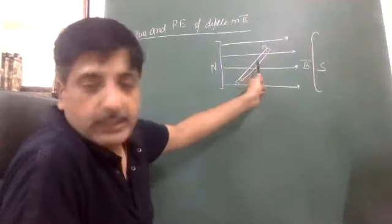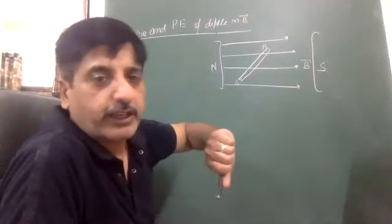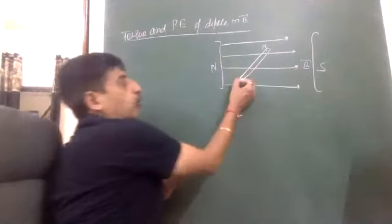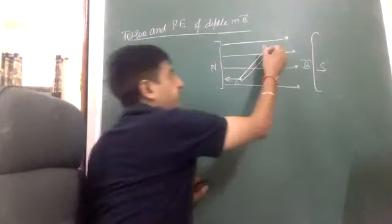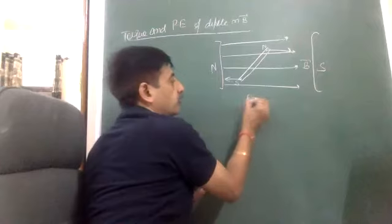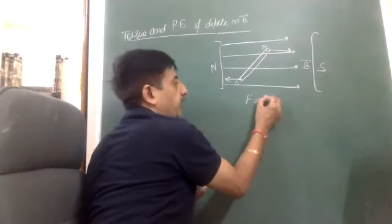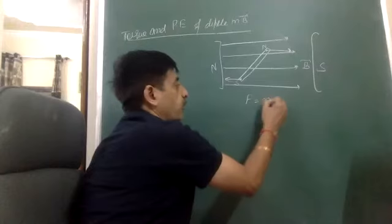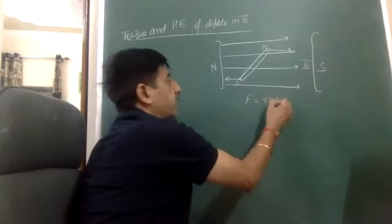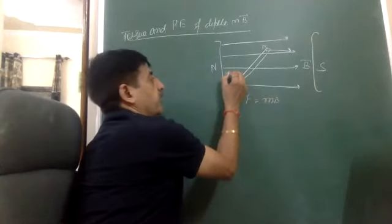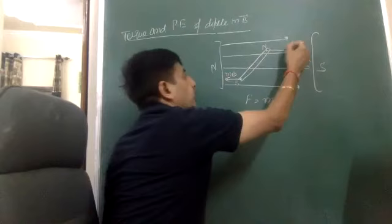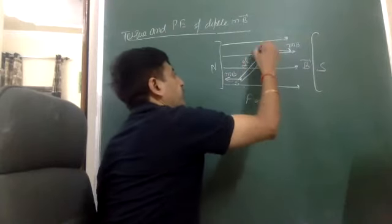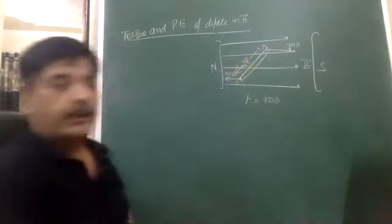The torque acts on the magnetic dipole due to the external field. Analogous to F = qE in electrostatics, here the force on each pole is F = mB. Both poles experience force mB, and the dipole has a length equal to its diameter (2L).